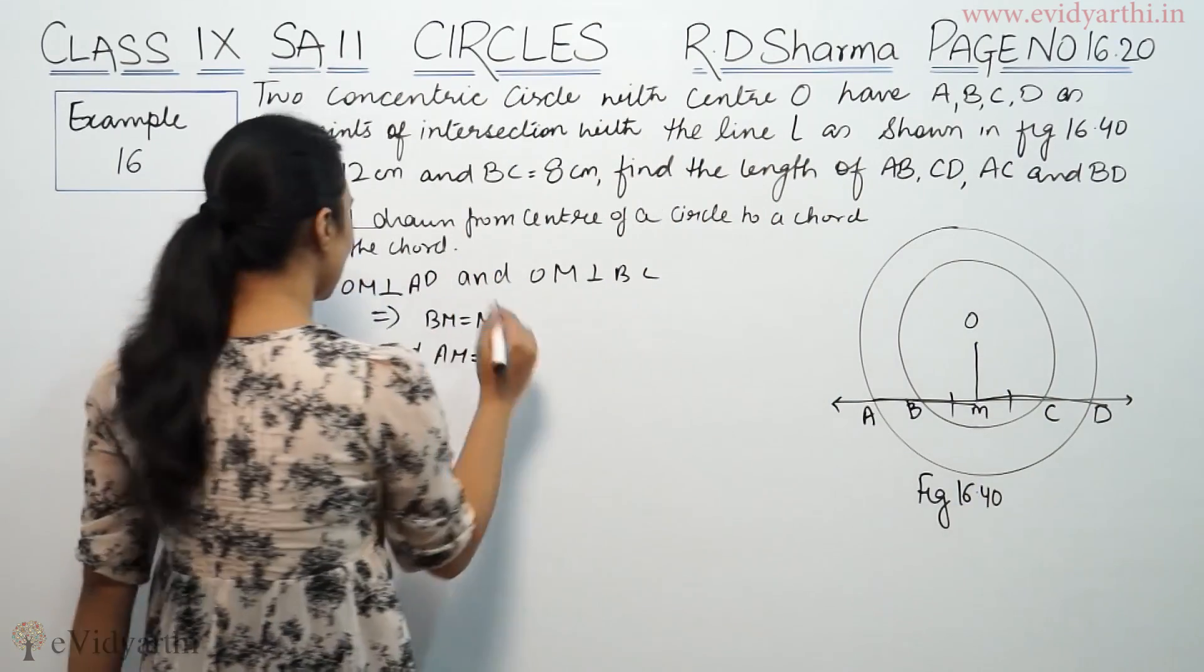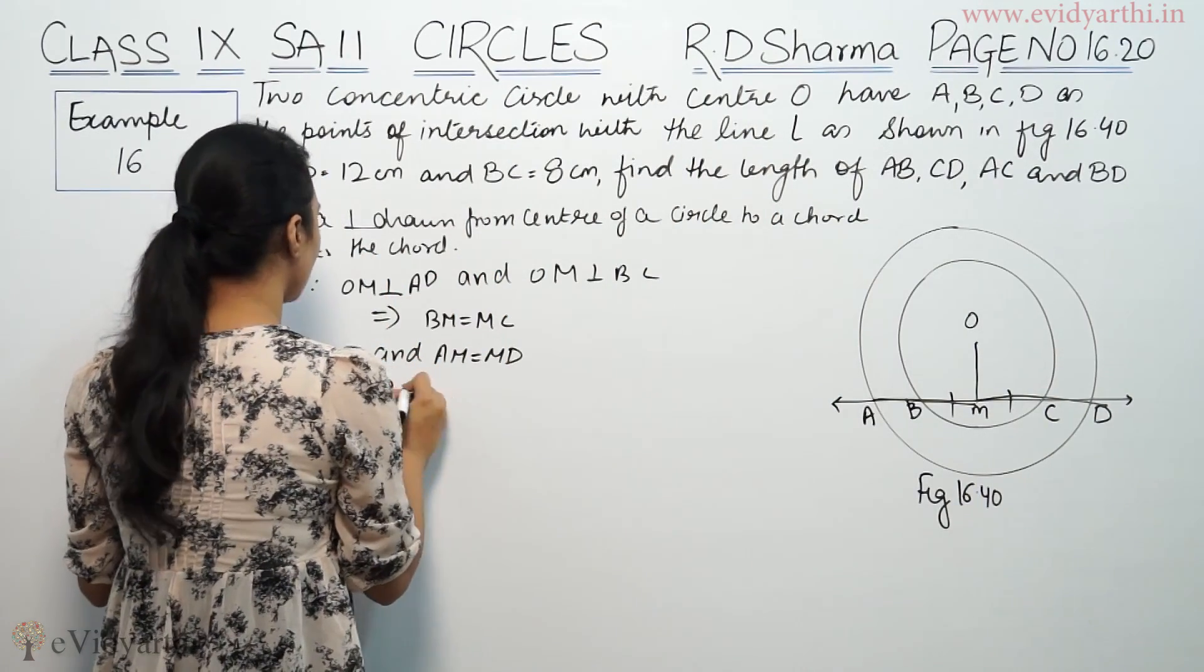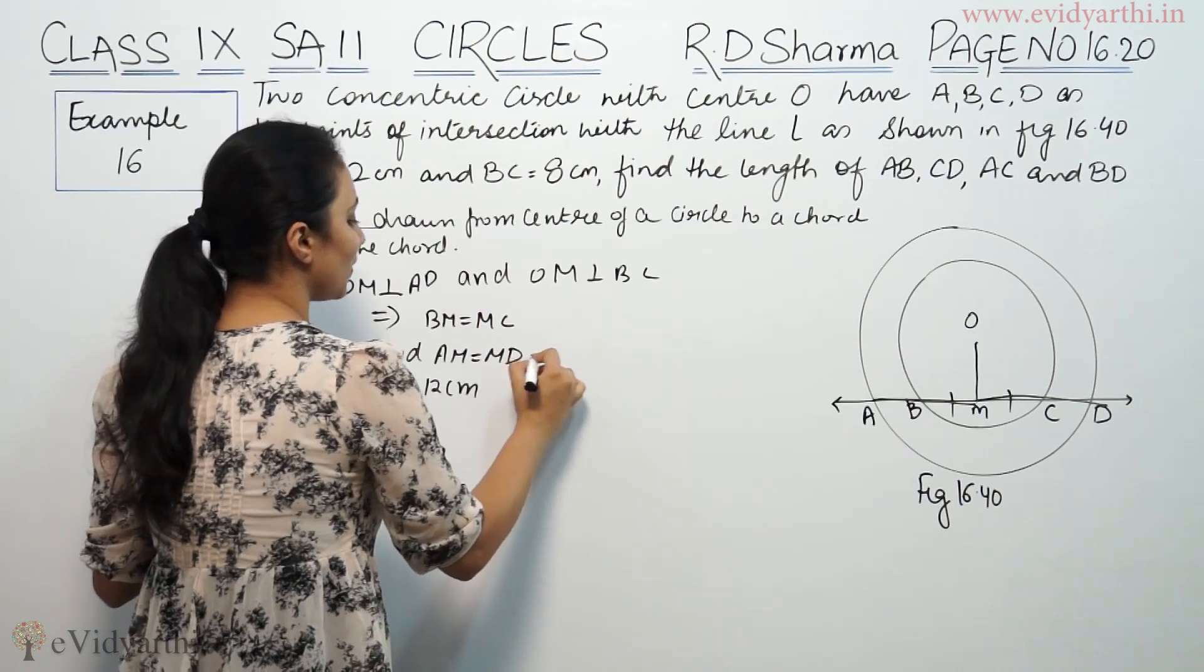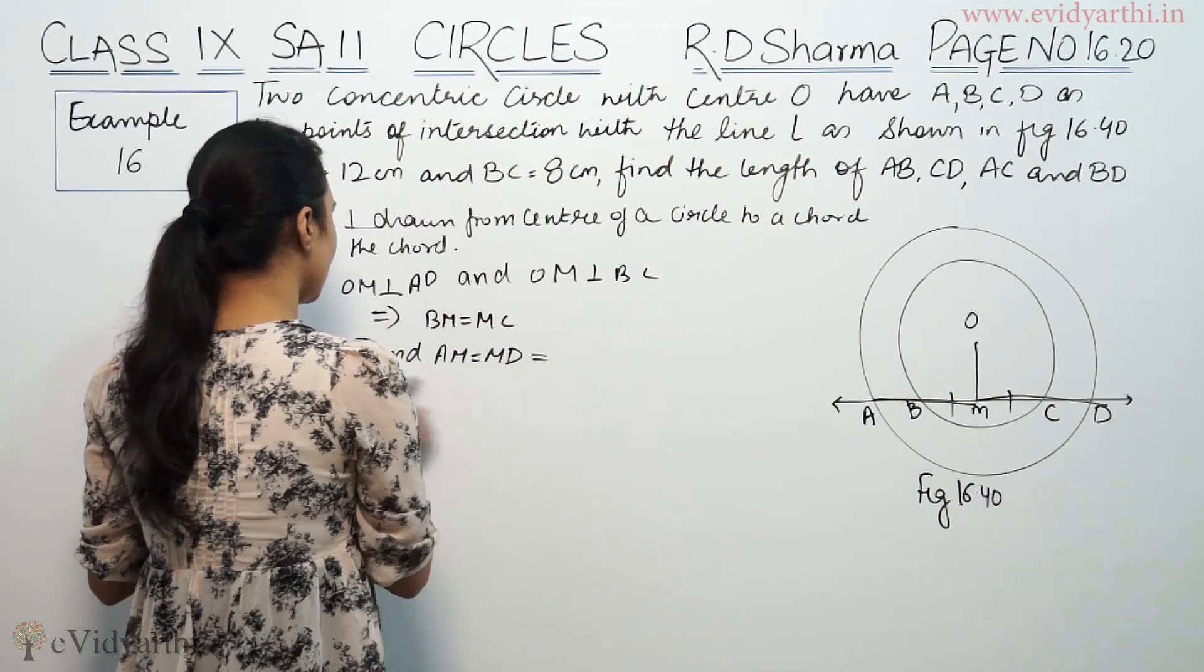Now, we have AD's length here. We have 12. AD is equal to 12 cm. So, AM and MD will be equal to 6 cm.